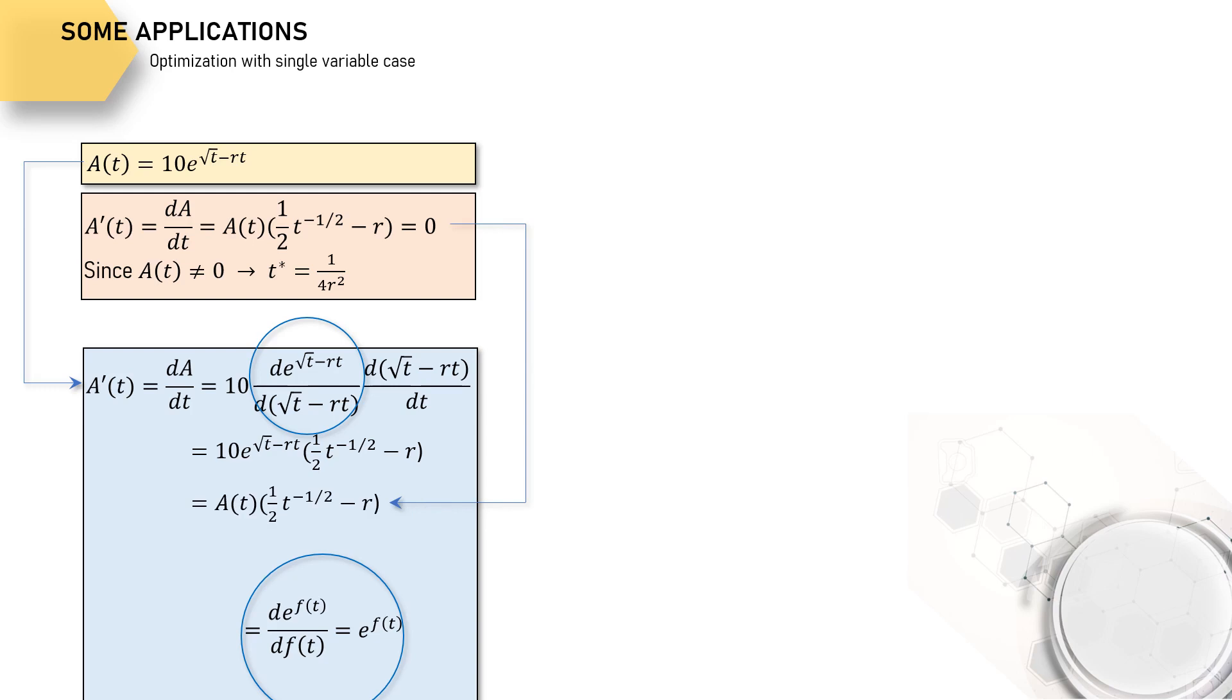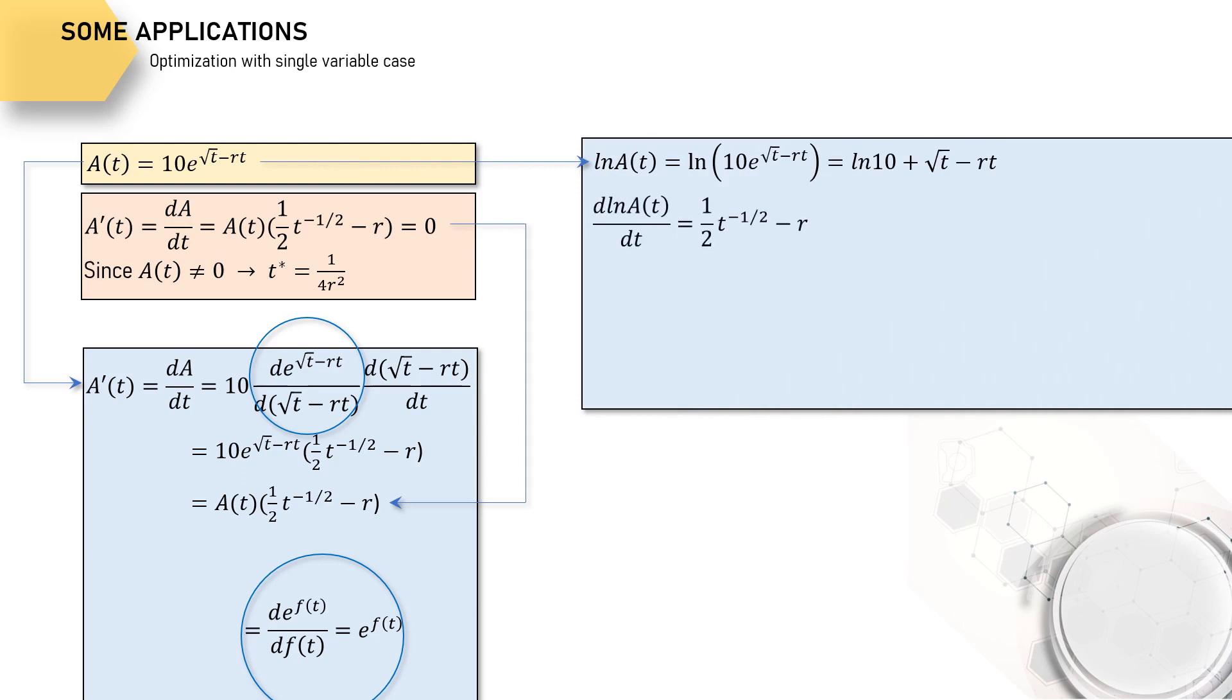We can also use the natural logarithmic theorem to find the first derivative of A. Look, we can convert the function first to natural logarithmic function like this, then find this first derivative. Of course, it's not the end because what we're looking for is dA/dT, not d(lnA)/dT. But we know that d(lnA) is dA/A, so that we get this equation. And eventually, we get the first derivative of A, which is exactly the same with the previous result.